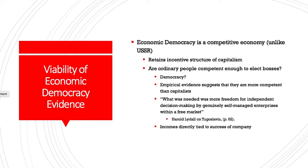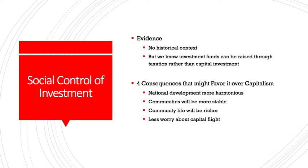Regarding social control of investment, there is no strong historical evidence, so theoretical projections are needed. Schweikert identifies four consequences that may favor social control of investment over capitalism: national development will be more harmonious because regions won't compete over investment; communities will be more stable without jobs constantly leaving and coming as in capitalist systems; community life will be richer because investment returns to the community; and there will be less worry about capital flight because capital always returns to the community rather than leaving for a different region or country.